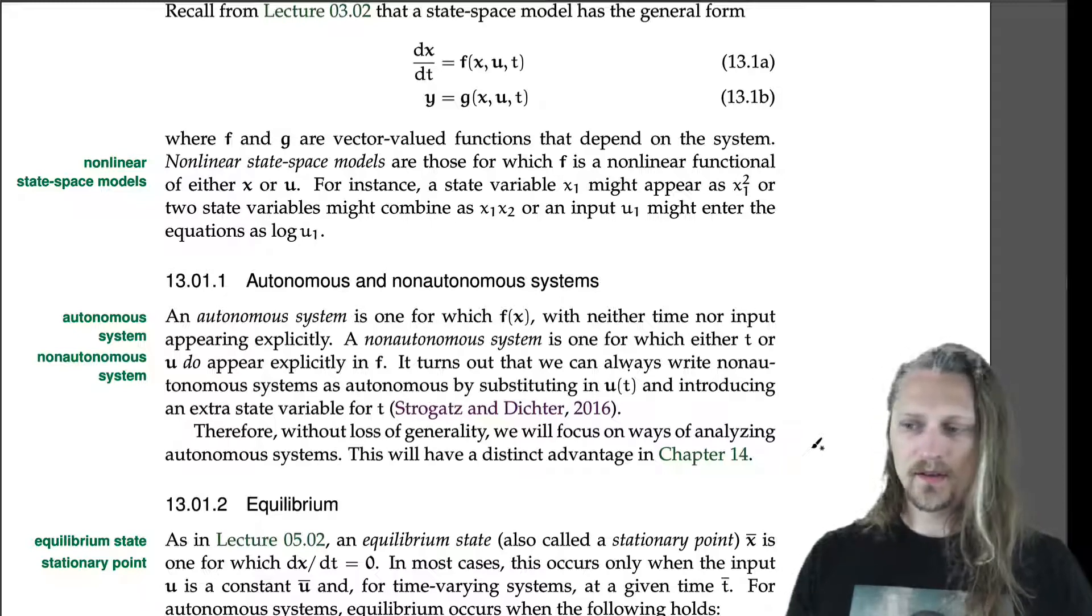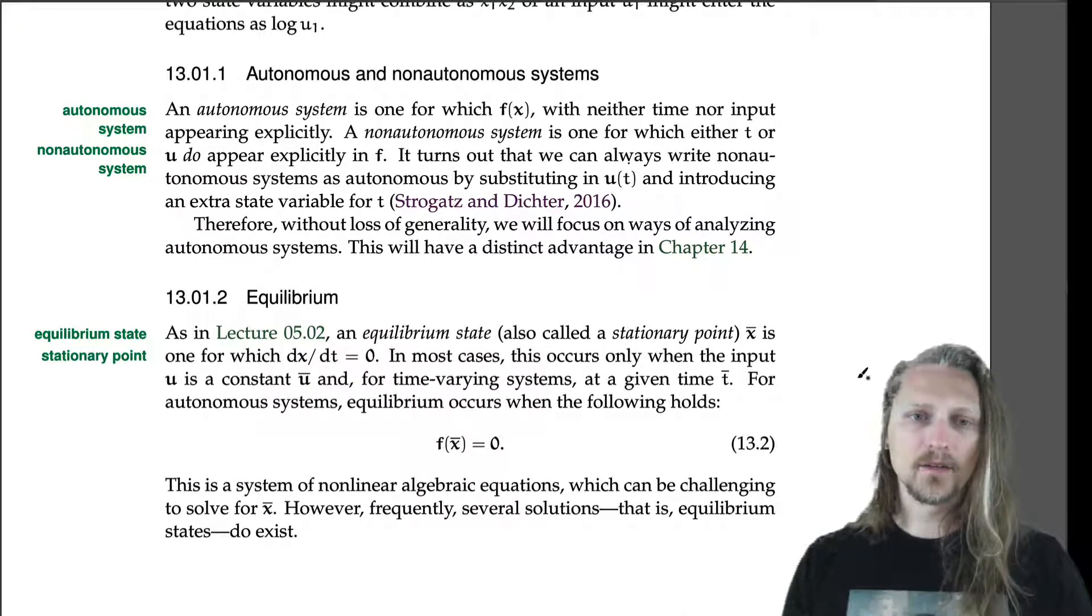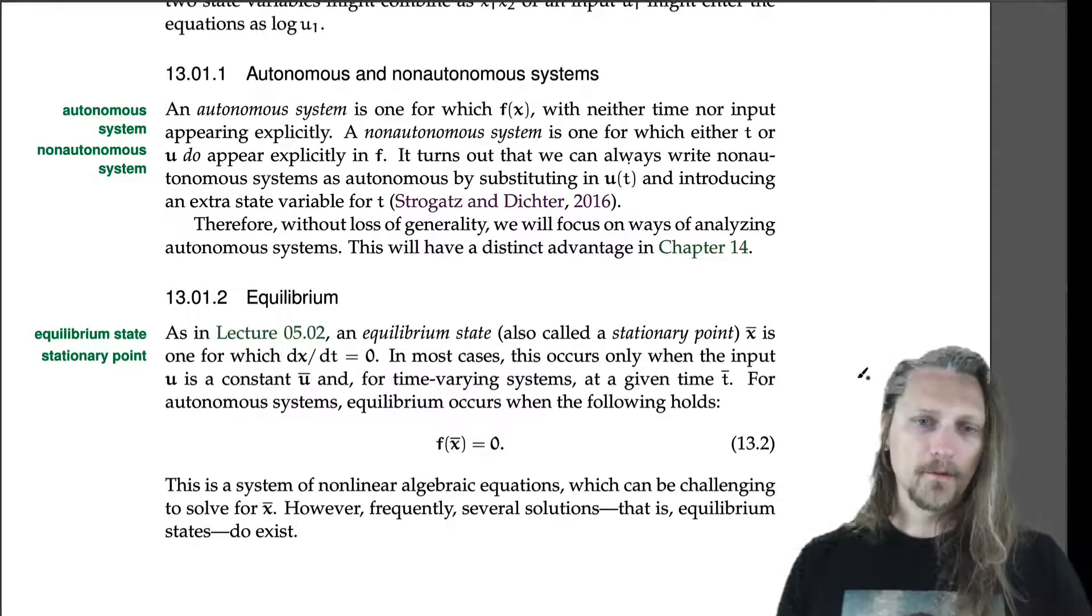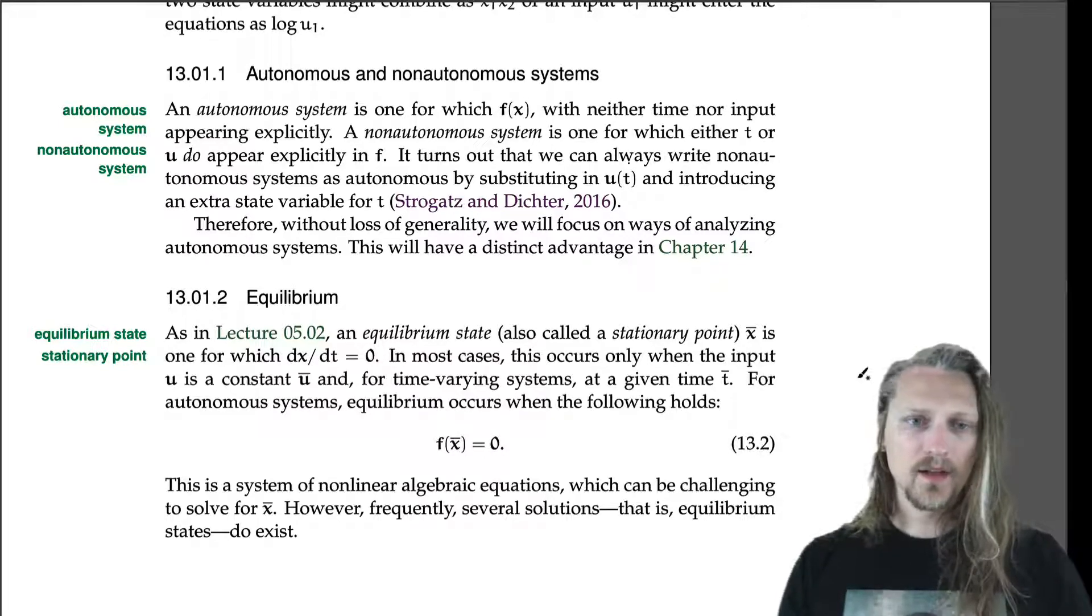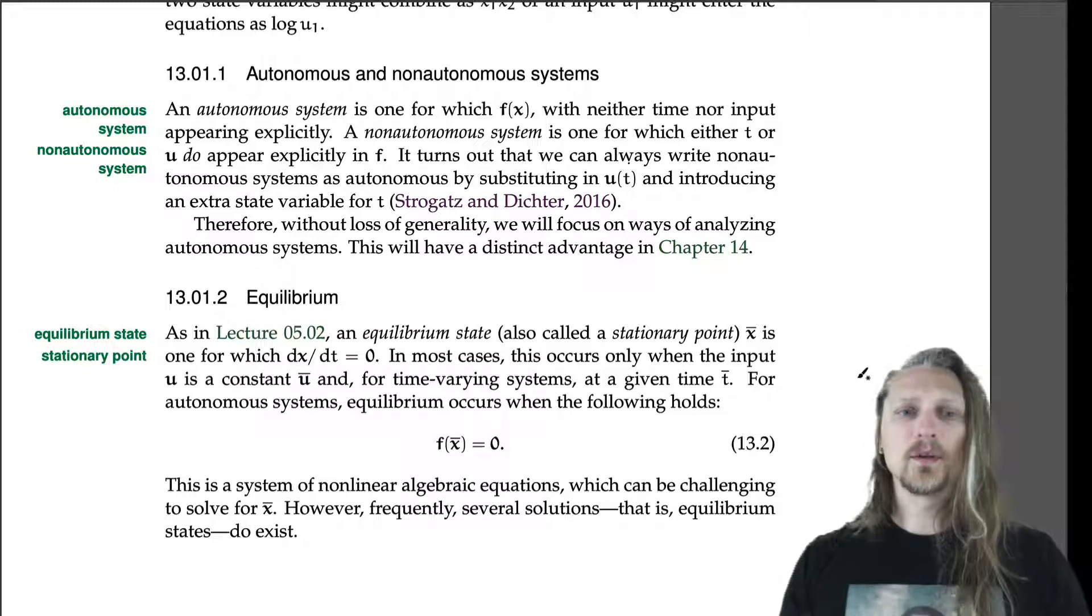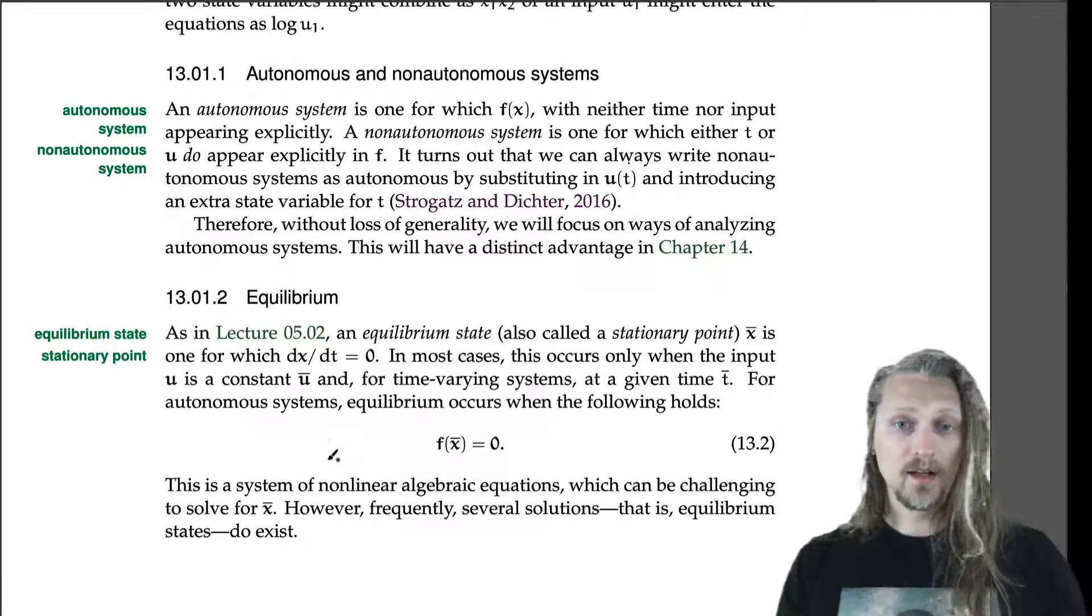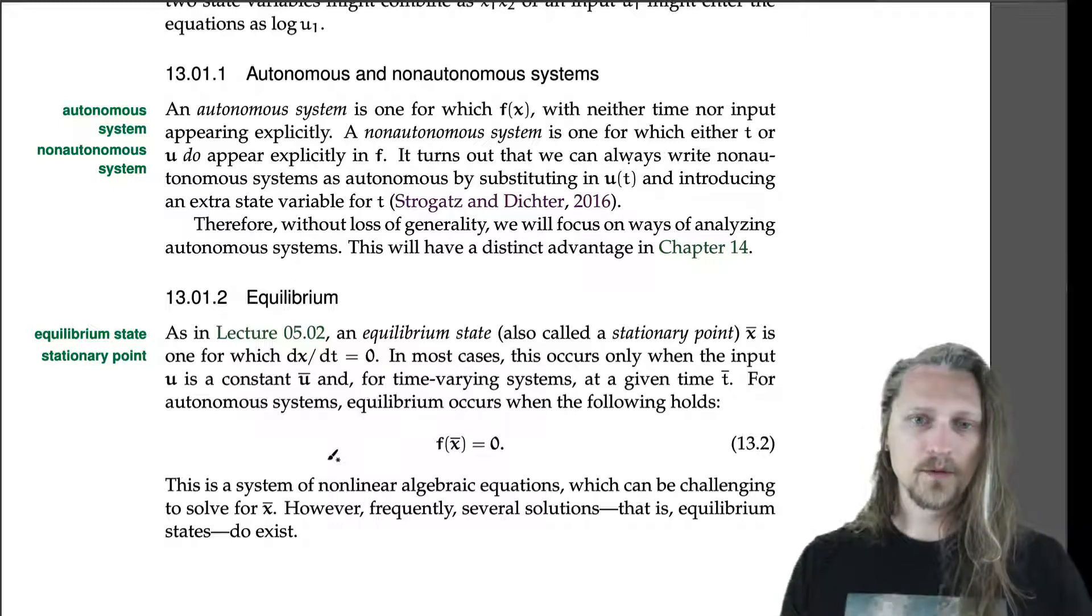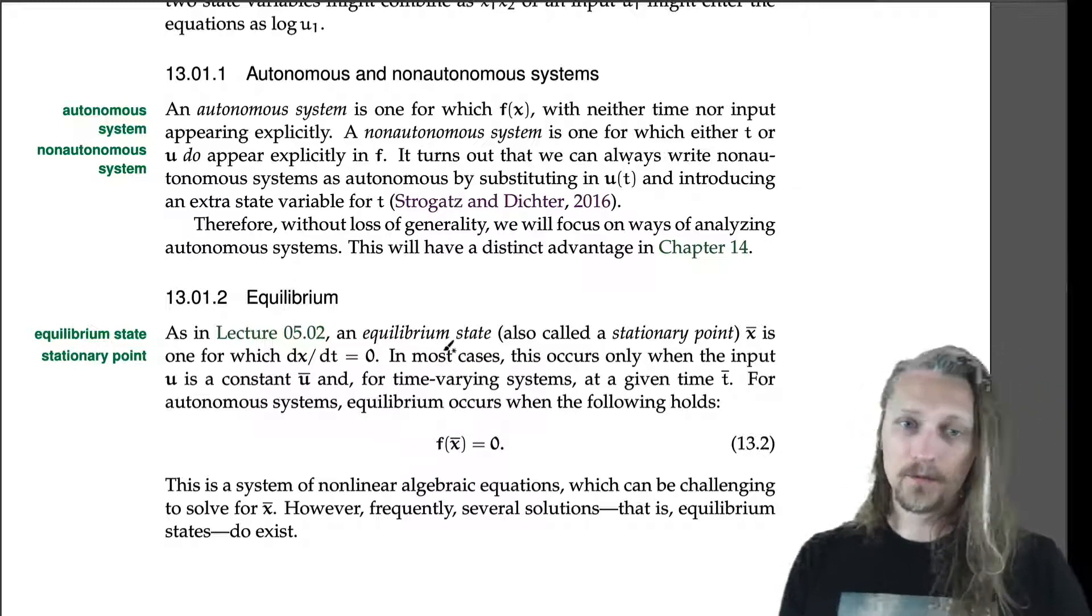Okay, equilibrium. As in Lecture 5.2, so going back to Chapter 5 now, an equilibrium state, also called a stationary point, is one for which dx/dt equals 0. In most cases, this occurs only when the input u is a constant and, for time-varying systems, at a given time t. For autonomous systems, remember, if we are going to use our autonomous systemizer, if you will, this technique up here, we can rewrite these non-autonomous systems as autonomous, so we can do this.